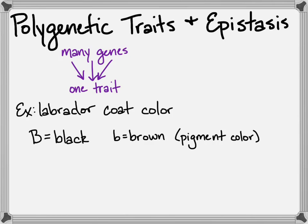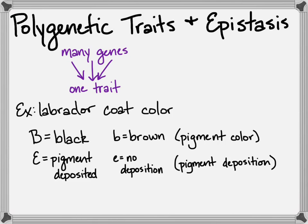Well, the yellow comes in when you consider the gene for depositing the pigments in the fur. So dominant is the pigment is deposited there, and so you'll have a black or chocolate lab. But recessive means that even though those pigments are circulating around in the cells, they're not going to actually get into the fur themselves, so you don't see the pigment.